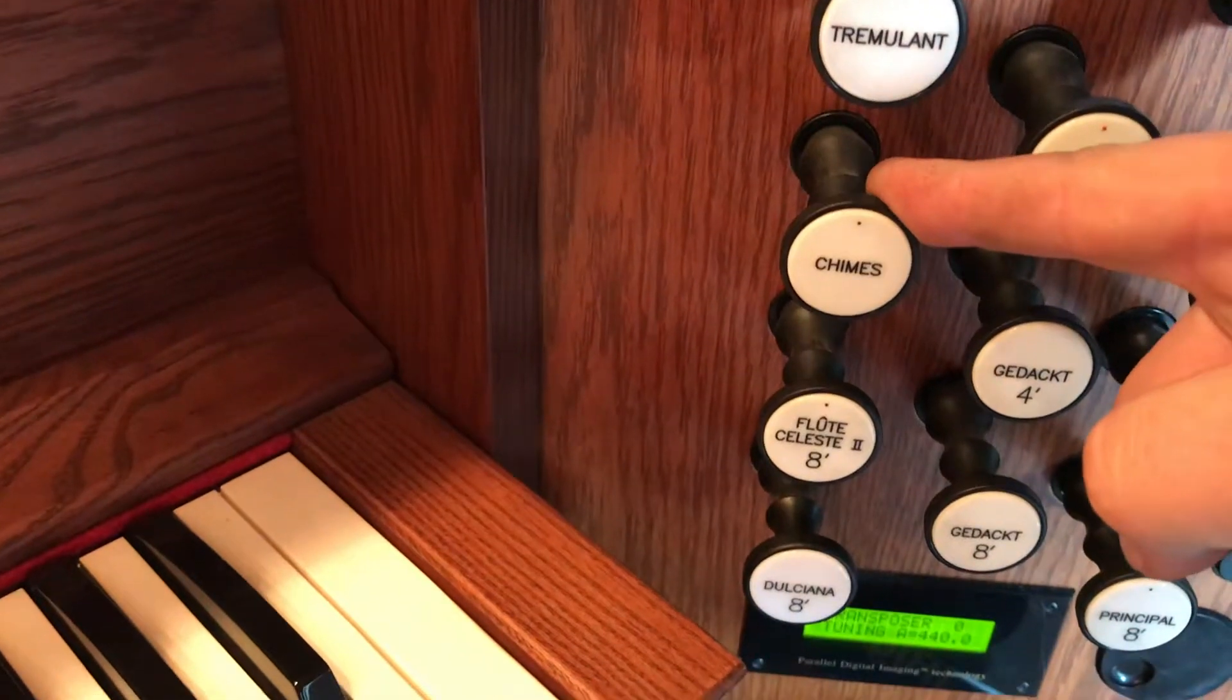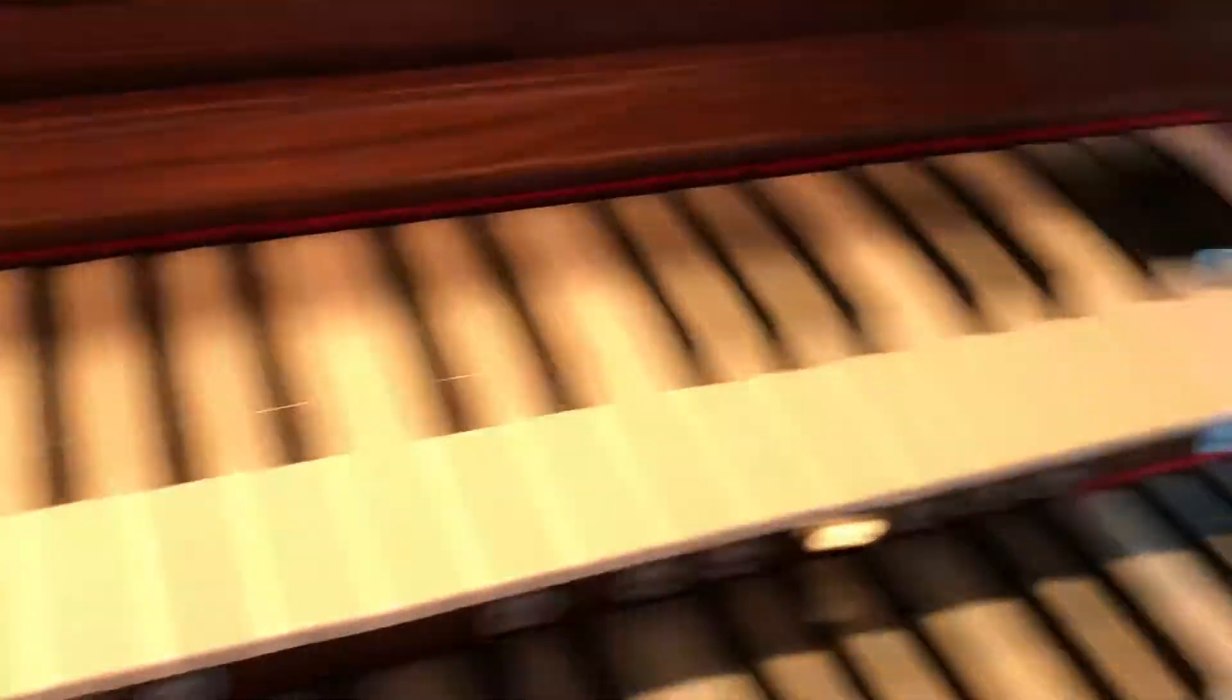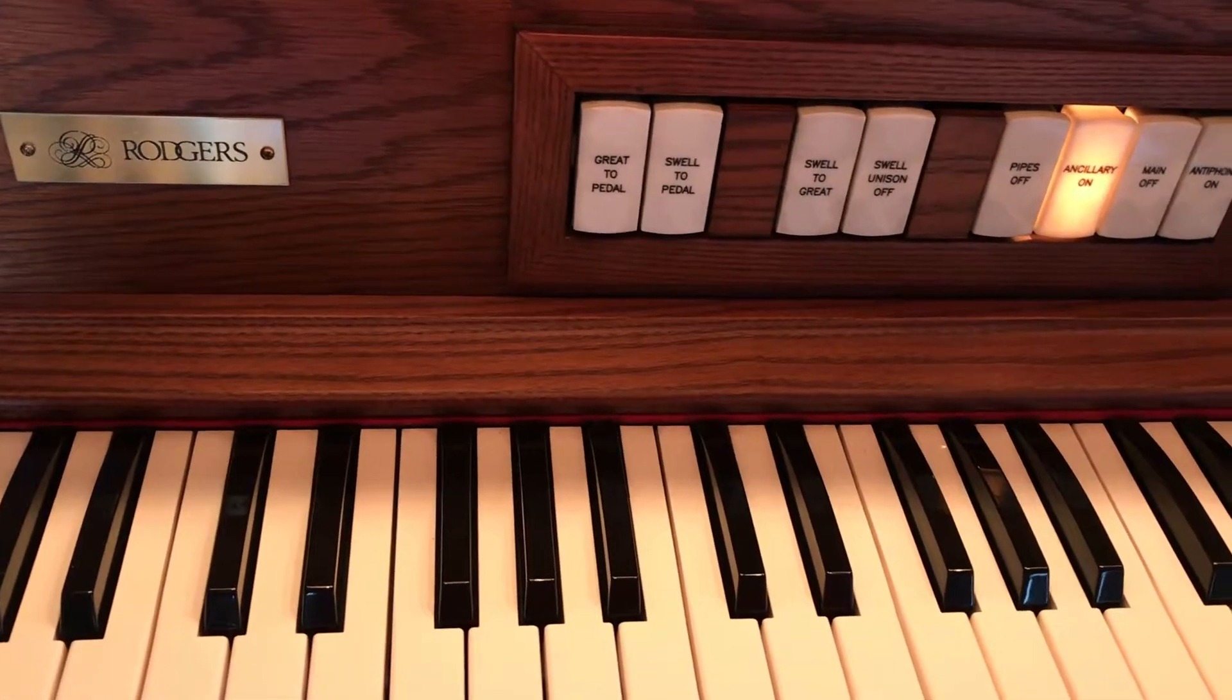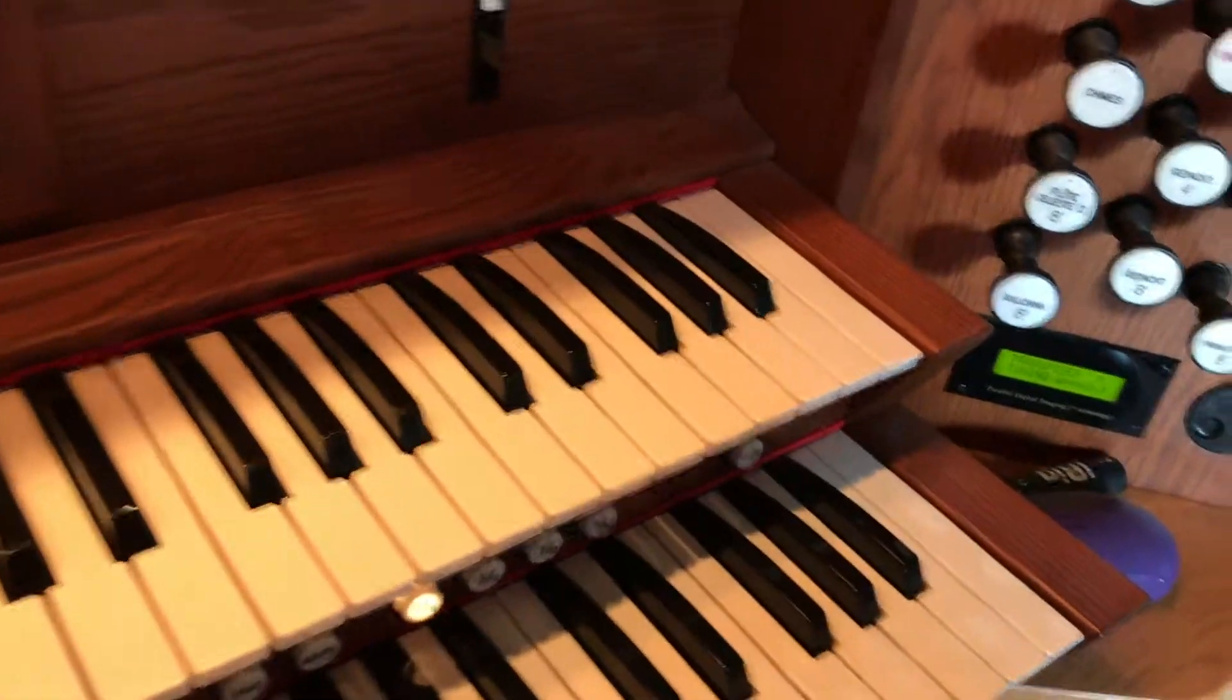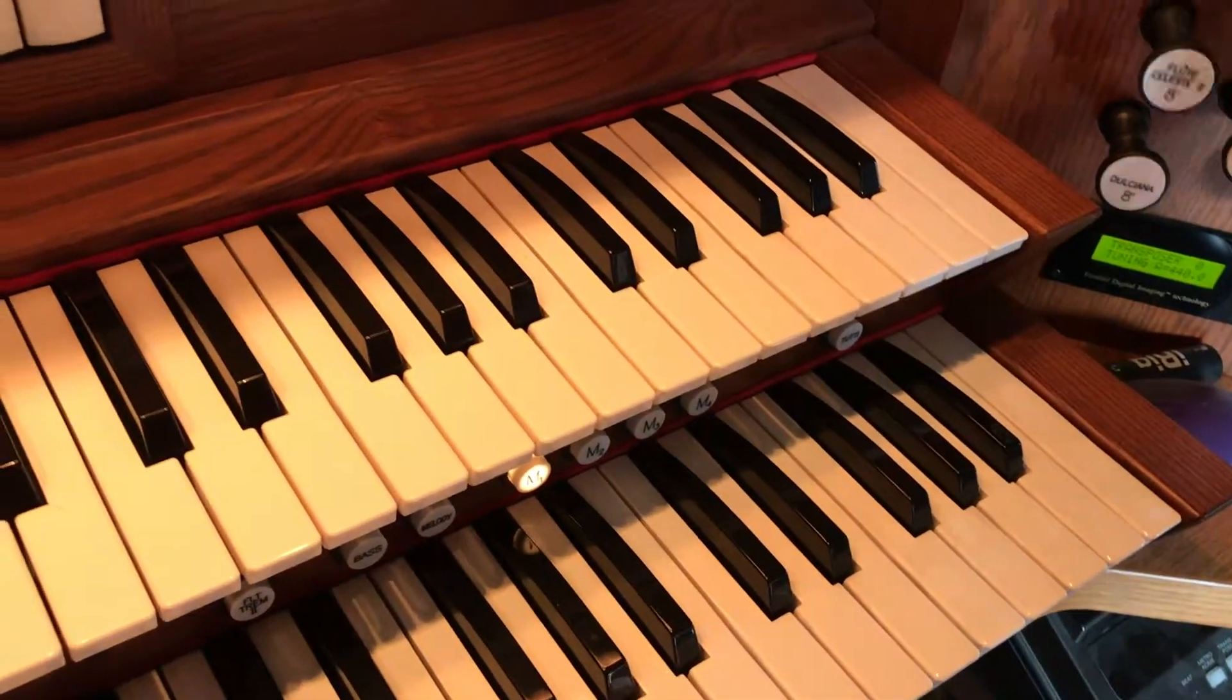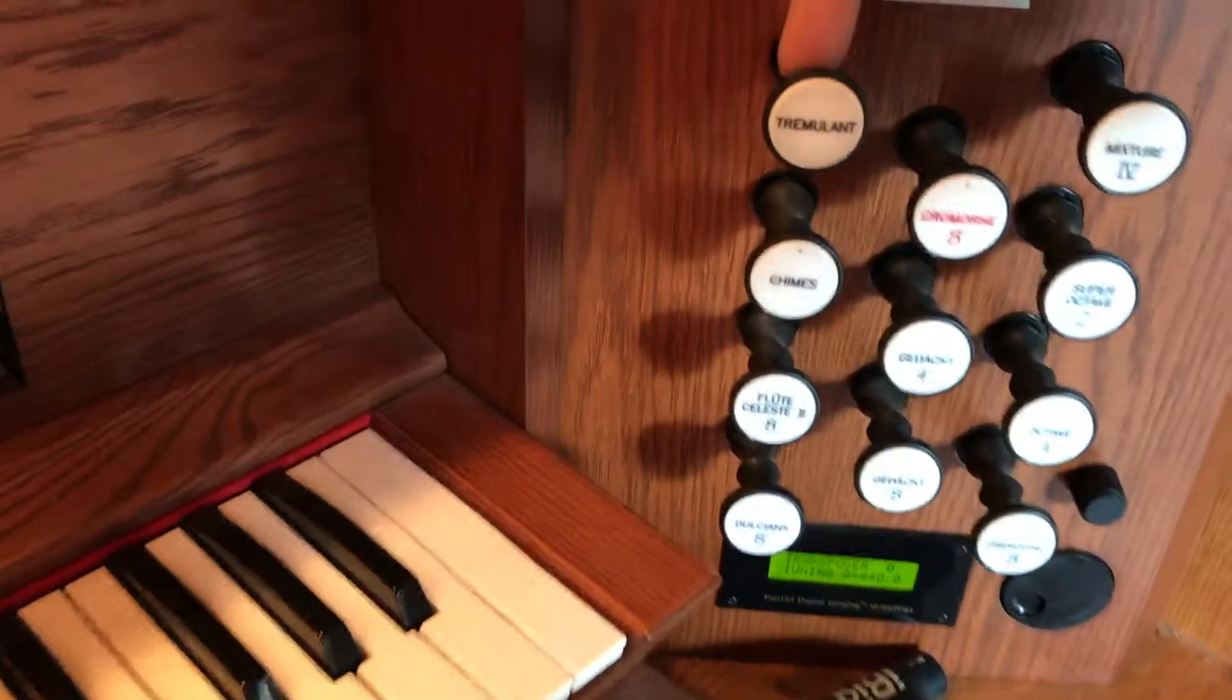So, and then we have two little functions here. This one is chimes. So say you want to play something more Christmassy and you want to play something with chimes. Well, now you have that option. Here you go. So you have a chime on the great division, which is very helpful with Christmas music and anywhere else that you would, maybe a little bit of patriotic music, anywhere else that would require some chimes.